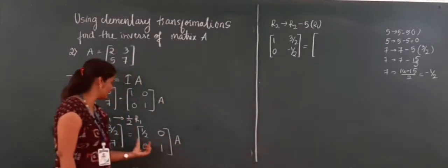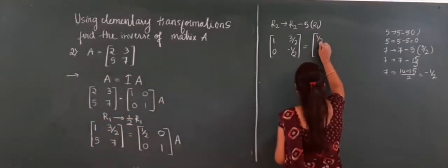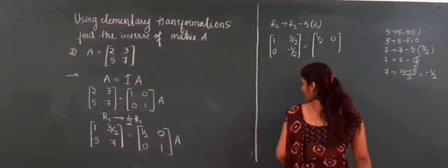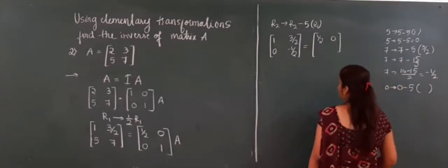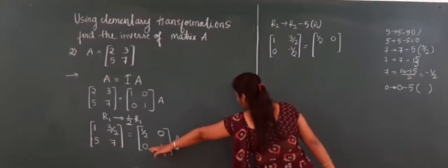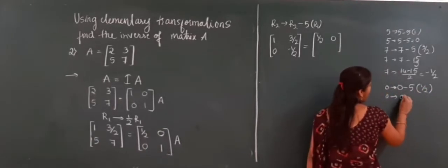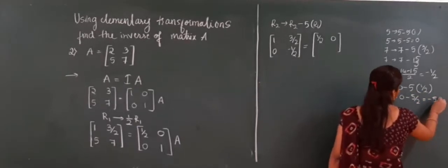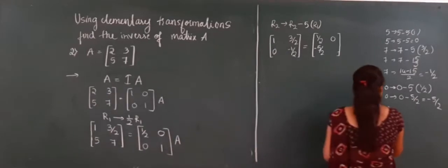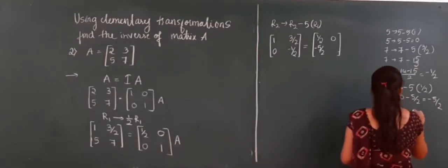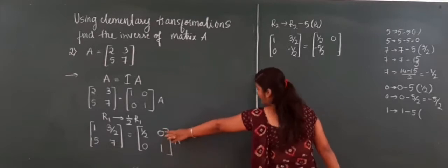You applied the elementary operations on the left side, so you have to apply them on the right side also. R1 remains as it is: 1/2, 0. Now I have to change R2. R2: 0 changes to 0 minus 5×R1. The corresponding element is 1/2, so 0 minus 5×(1/2) = -5/2. And 1 changes to 1 minus 5×0 = 1.